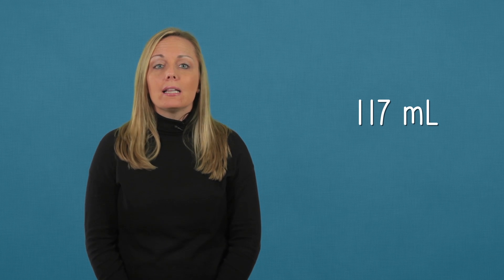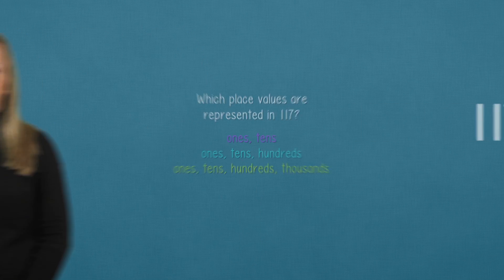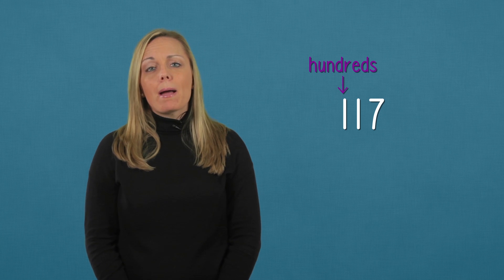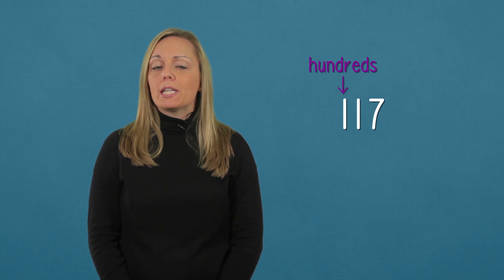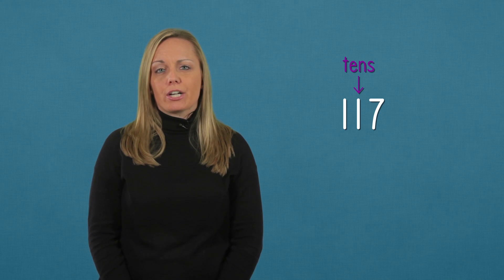Now I want to round 117 milliliters to the nearest 10. Let's see. In the number 117, how many place values are represented? We have values in the ones place, the tens place, and the hundreds place. But remember, we are going to round to the nearest 10, so we're going to focus on this column here to start.